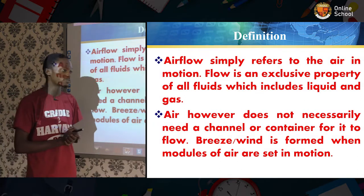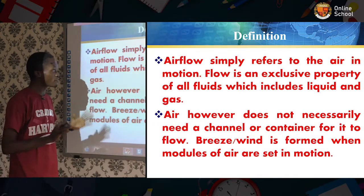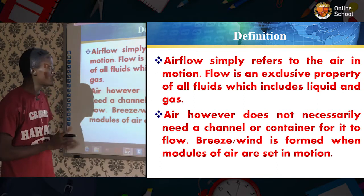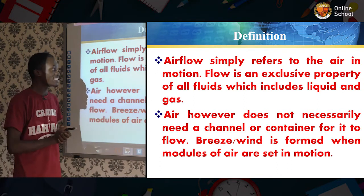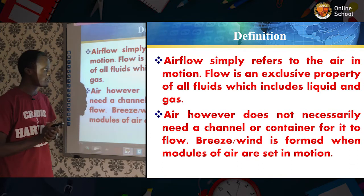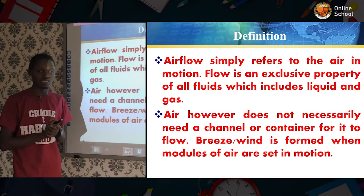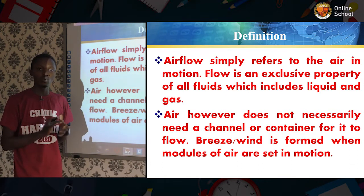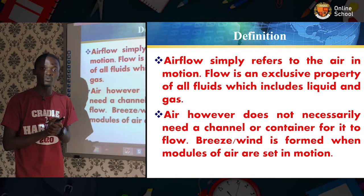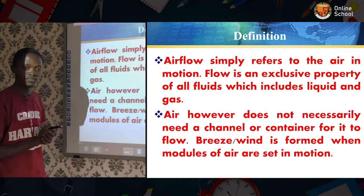Definition. Airflow system refers to the air in motion. Flow is an exclusive property of all fluids, which includes liquid and gas. In other words, when air is in motion, we refer it to as wind.